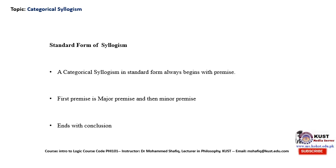And then obviously the natural conclusion of a form of syllogism is that it always ends with a conclusion. If it starts with the premise, the first premise being the major premise followed by the minor premise, it entails logically that it must end with a conclusion. This is the standard form of categorical syllogism. We should keep in mind these three points, which are the essence of standard form. If we break any of these points, that would render our categorical syllogism invalid.